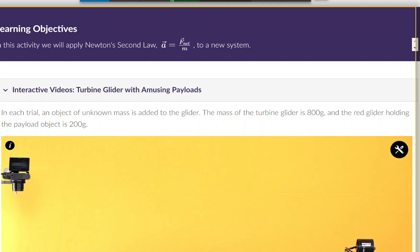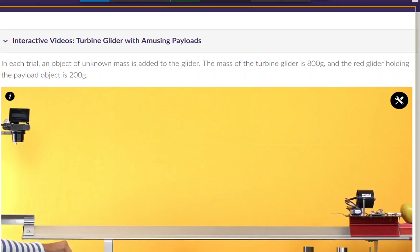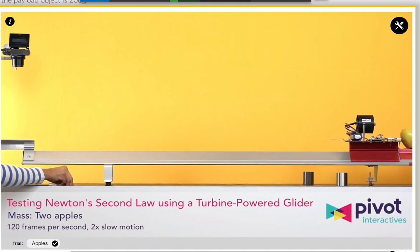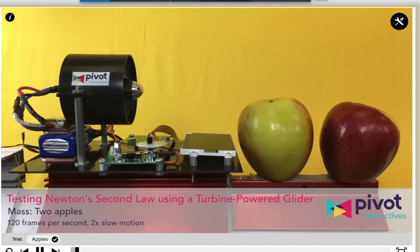So I'm not going to get too into the weeds on this. We're just going to look at a simple case where we have a turbine-powered glider pushing some fruit. So it's going to look something like this.